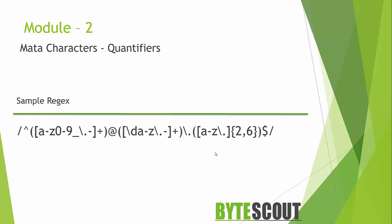Quantifiers are extremely useful meta characters, but the downside is they can get complex very fast. For example, matching a valid email address produces a complex-looking expression you might find on the internet. This is why people stay away from regular expressions — because they appear very complex at first without fundamental knowledge of meta characters. Luckily, you are watching this course. Now let's move on to the demo so you can learn how to use quantifiers in your expressions.